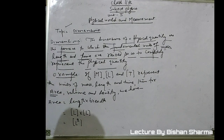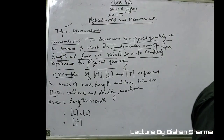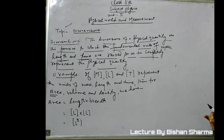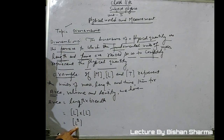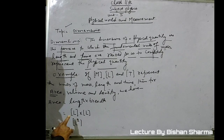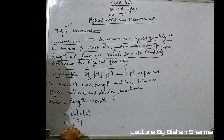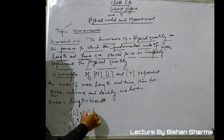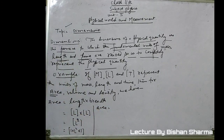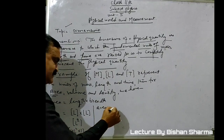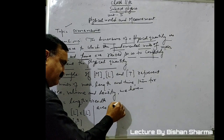In this chapter of dimensional analysis, we will represent all physical quantities in terms of mass, length, and time. In the formula of area, mass and time are absent, so they will be taken as raised to power zero. L squared means L squared into M⁰ into T⁰. So area is equal to M⁰L²T⁰. Mass raised to power zero is 1, and time raised to power zero is also 1.